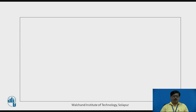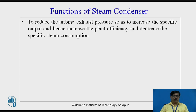The first function of steam condenser is to reduce the turbine exhaust pressure or back pressure of the turbine so as to increase the specific work output. When we expand the steam from high pressure to a pressure less than atmospheric pressure, there is an increase in enthalpy drop. This increase in enthalpy drop gives us more specific work output from the turbine. Since plant efficiency is defined as net work output divided by heat supplied, the net work output will be more, giving us increased plant efficiency.